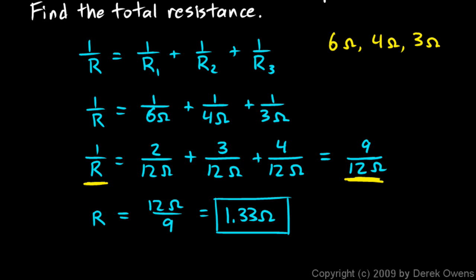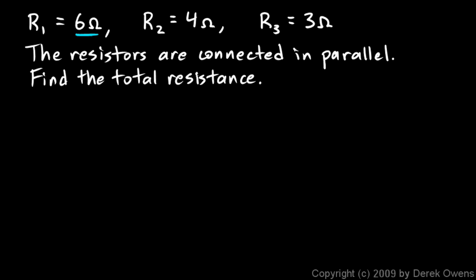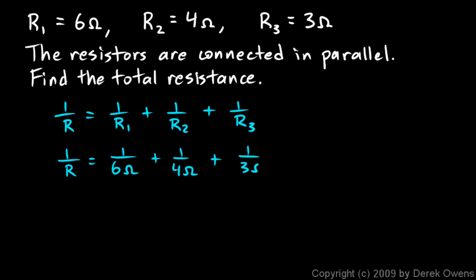Now one other thing. I'm going to solve this problem a slightly different way. I'm going to show you that this can be done with decimals as well as with fractions. We did it here with fractions. I'm going to do it also with decimals. I've got three resistors: 6 ohms, 4 ohms, and 3 ohms, trying to find the total resistance, and I'll use this equation: 1 over R equals 1 over R1 plus 1 over R2 plus 1 over R3.